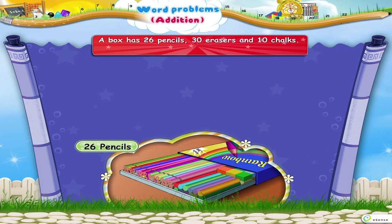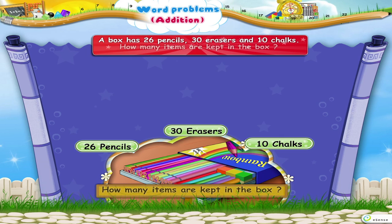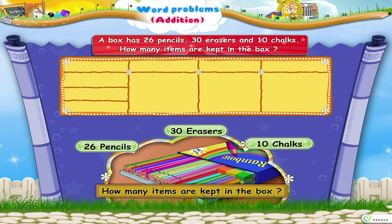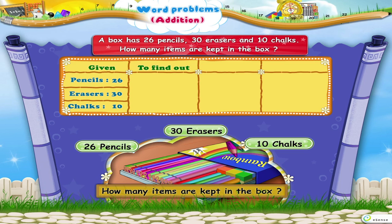Let us try another example. A box has twenty-six pencils, thirty erasers, and ten chalks. How many items are kept in the box? What is given? What is to be found out?